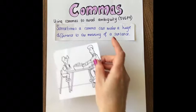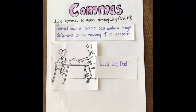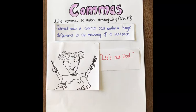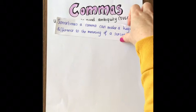In this next example we've got a dad eating lunch with his daughter. The daughter might say 'let's eat, dad,' indicating let's start eating now. If that comma gets left out we could have a completely different meaning on our hands — 'let's eat dad' — which sounds like we're putting dad on a plate and eating him instead of the food, which is totally different!